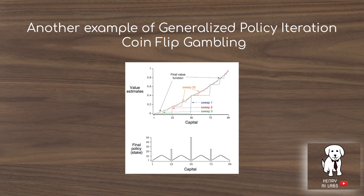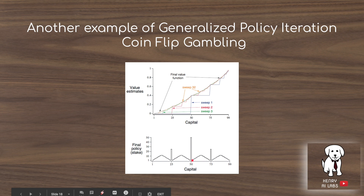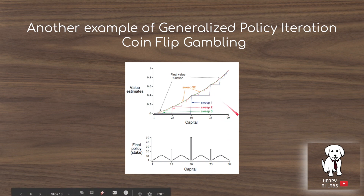The chapter also presents a gambling example of generalized policy iteration. You bet your capital on a coin flip with probability p_h = 0.4, deciding how much to bet given each amount of capital. The top chart shows value estimates of the states converging across iterative GPI sweeps. An interesting converged policy emerges: if you're at 50 you bet all your money, while at 51 you bet just a little. This chart provides a nice visualization of the convergence of the GPI algorithm.